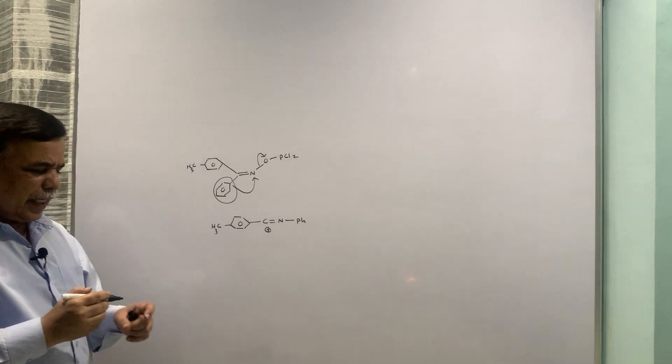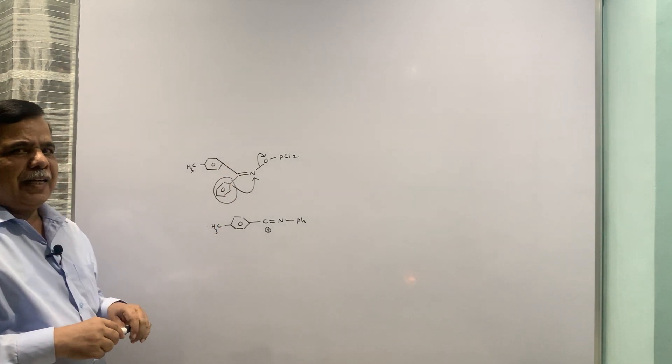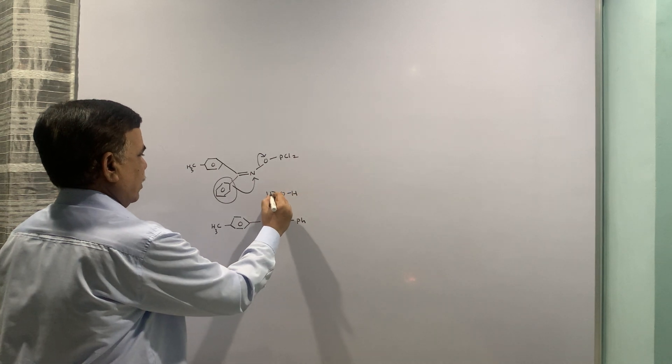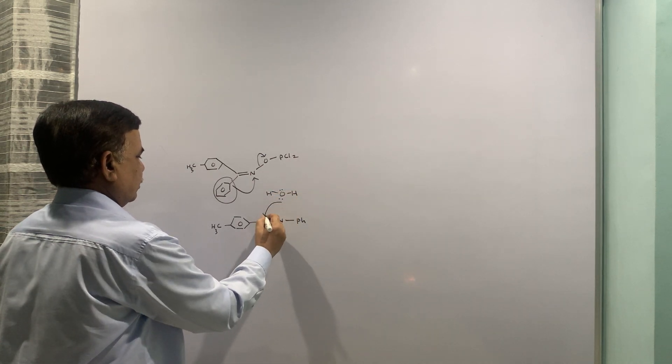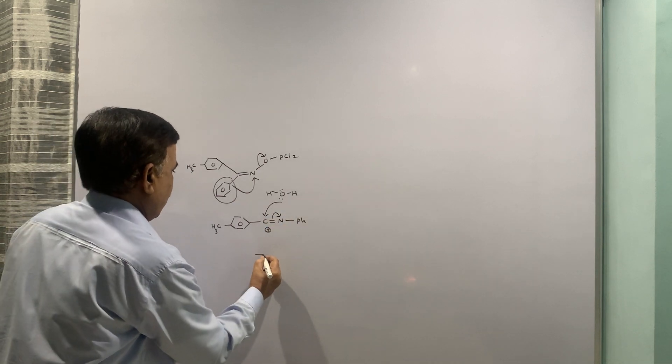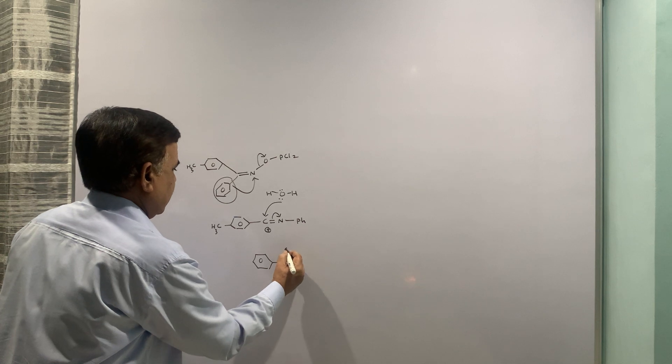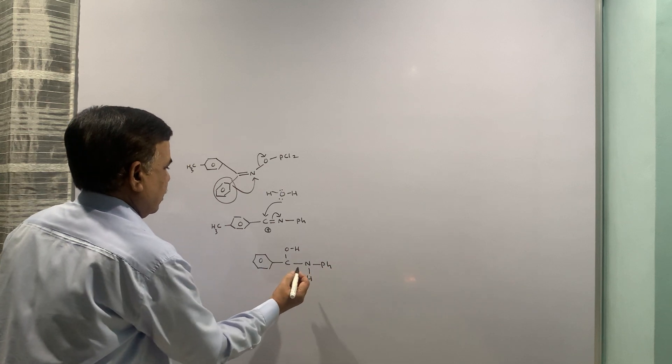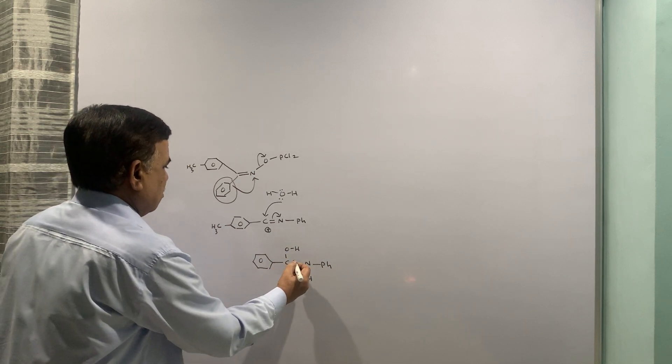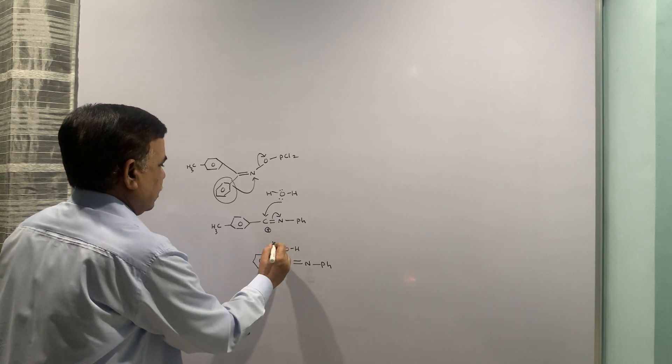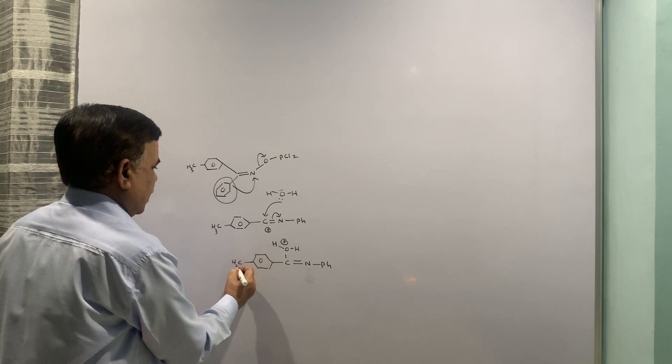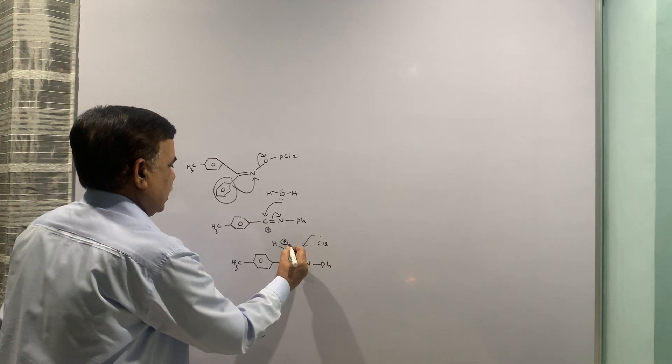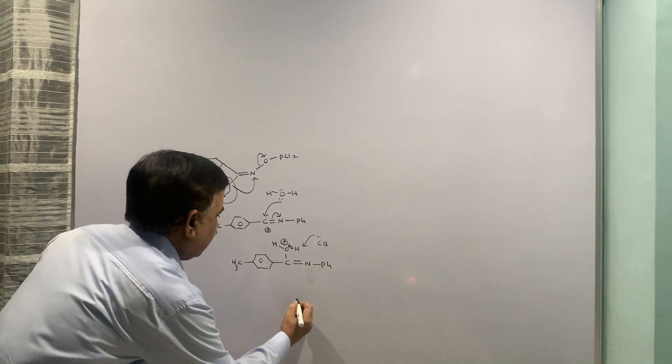Although this has got greater migrating aptitude, this is anti and the group anti to leaving group migrates. And then it is a matter of addition of water. Finally what you have, this is OH, this is going to be NH, Ph or initially you can show the, let me put one more step here. Positive charge is taken up by oxygen. That is first thing. Conjugate base will help in stabilizing this charge.